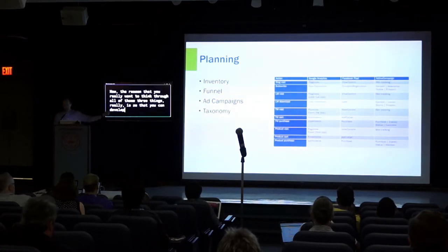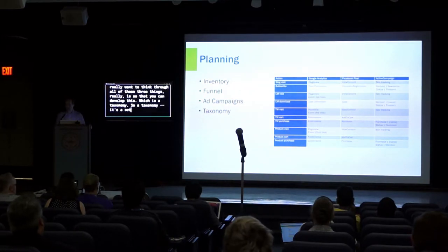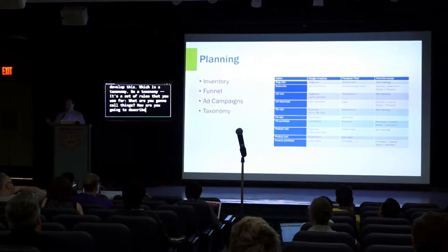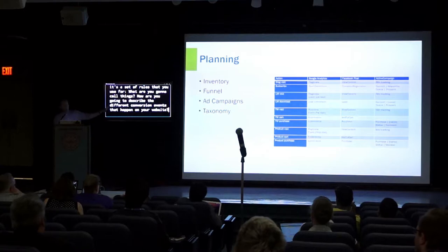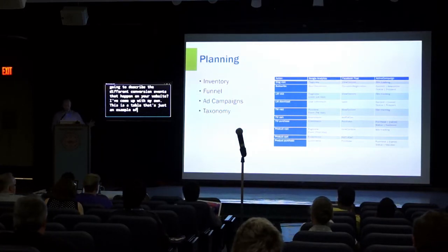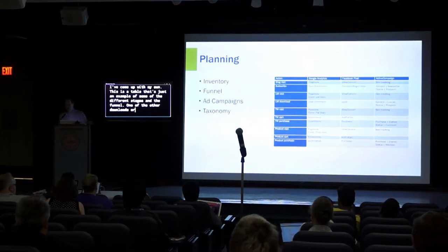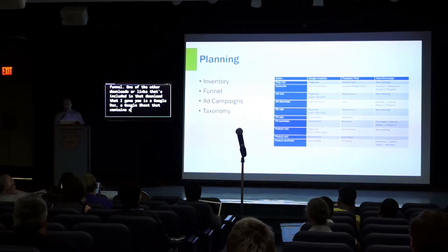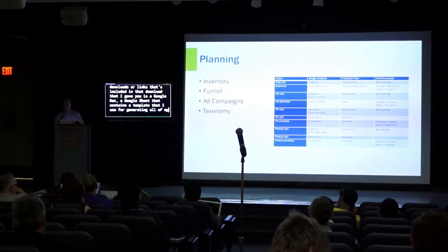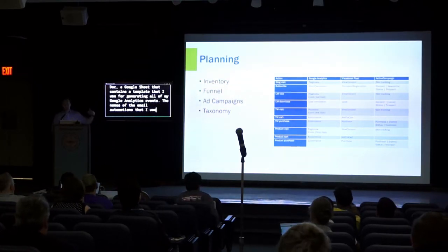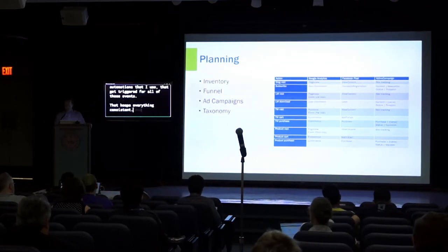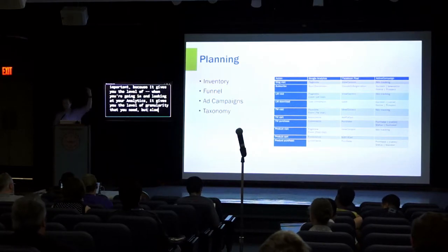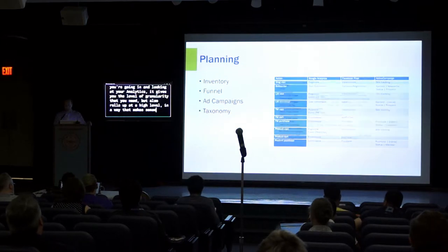You want to understand your ad campaigns. You might have one marketing funnel but multiple ad campaigns all part of that funnel, each with its own stages and parameters to capture. The reason you want to think through all three of those things is so you can develop a taxonomy — a set of rules for what you're going to call things, how you're going to describe the different conversion events that happen on your website. I've come up with my own, and a Google Sheet template is included in that download for generating all of my Google Analytics events and keeping everything consistent.